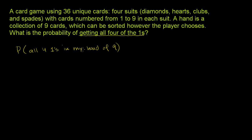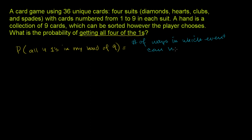Now this is kind of daunting at first. You're like, I have nine cards, and I'm taking them out of 36, and I have to figure out how do I get all of the ones. But if we think about it in very simple terms, all a probability is saying is the number of events, or the number of ways in which this event happens. So this is the definition of probability: it's going to be the number of ways in which the event can happen. And when we talk about the event, we're talking about having all four ones in my hand.